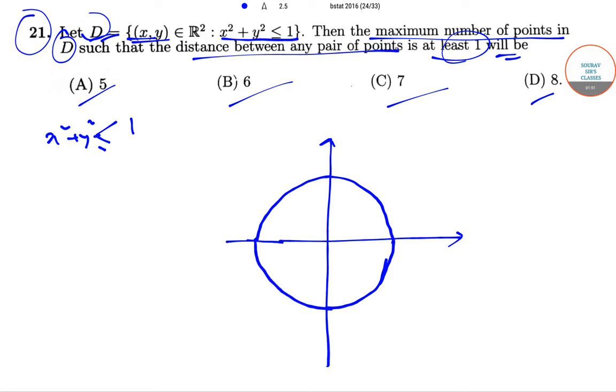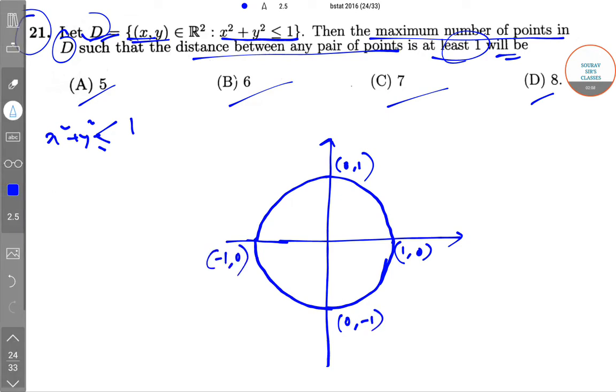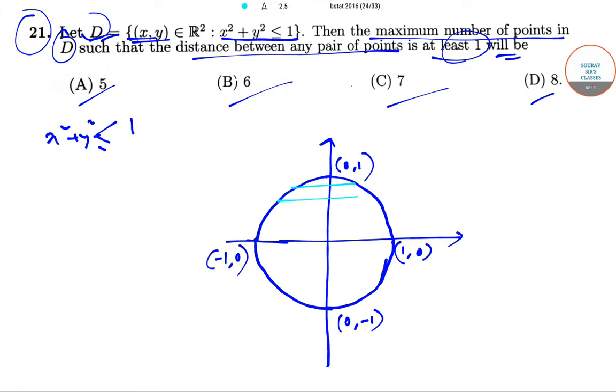So if this is (1,0), this is (0,1), this is (0,-1), and this is (-1,0), so the area x² + y² less than or equal to one will be given by this area. The equation of this is x² + y² = 1.